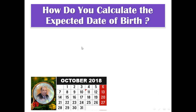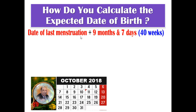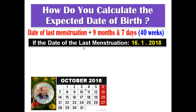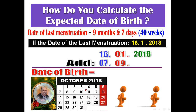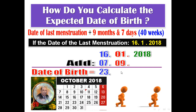To calculate the date of delivery, take the date of last menstruation and add 9 months and 7 days, or add 40 weeks. For example, if the date of last menstruation is the 16th of January 2018, we add 7 days and 9 months, giving a date of delivery of the 23rd of October 2018.